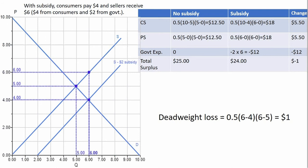To analyze the subsidy, we're going to shift down the supply curve by the amount of the subsidy. So this is just a $2 shift — you can see here that's 6 to 4. Our new equilibrium occurs where the supply curve that incorporates subsidies intersects our original demand. We've got a price of $4 and an equilibrium quantity of 6.